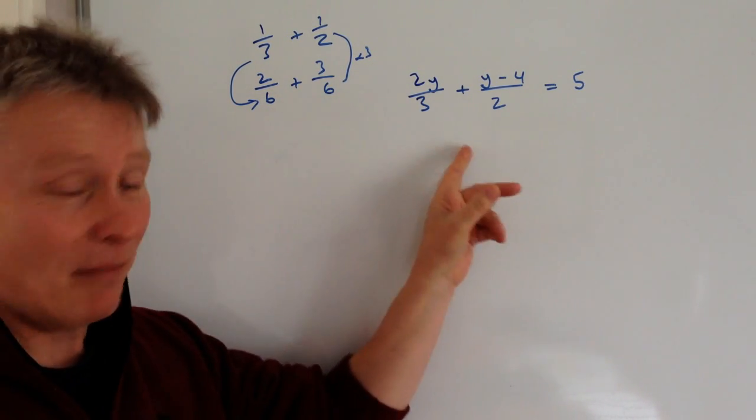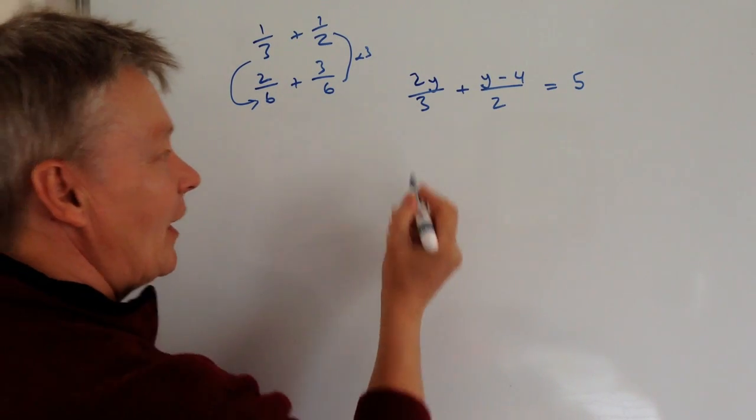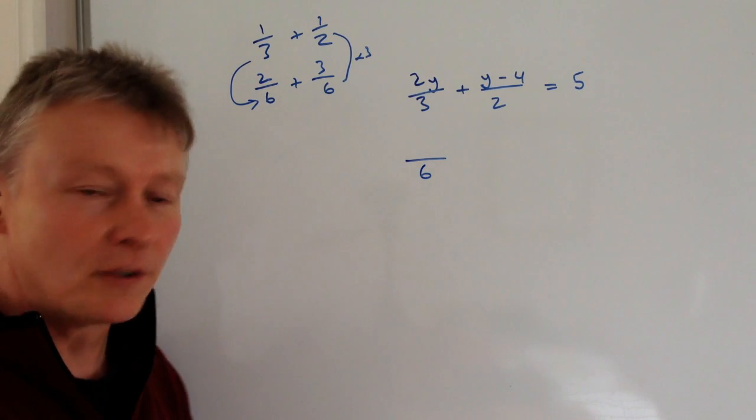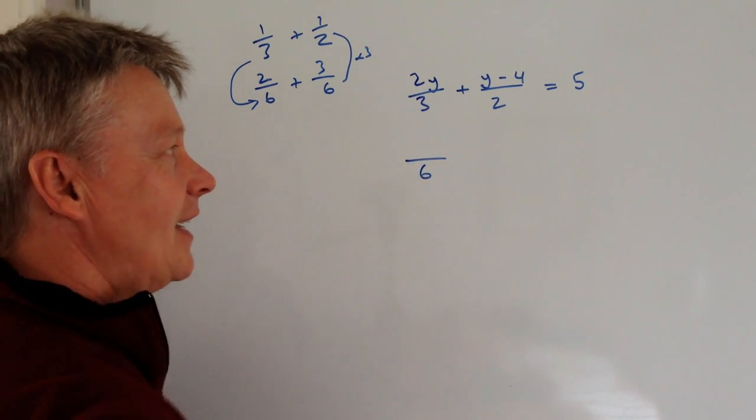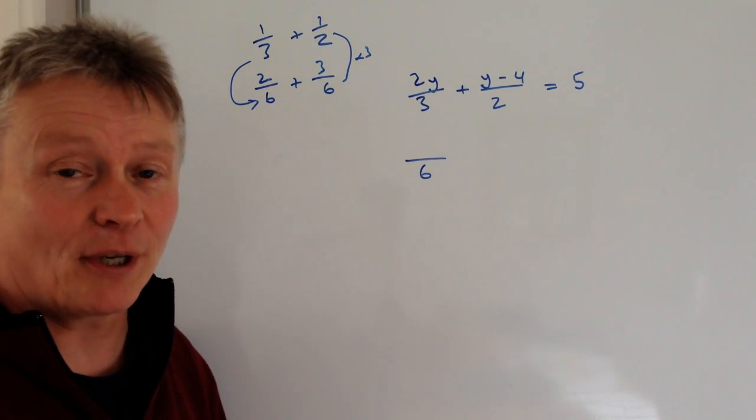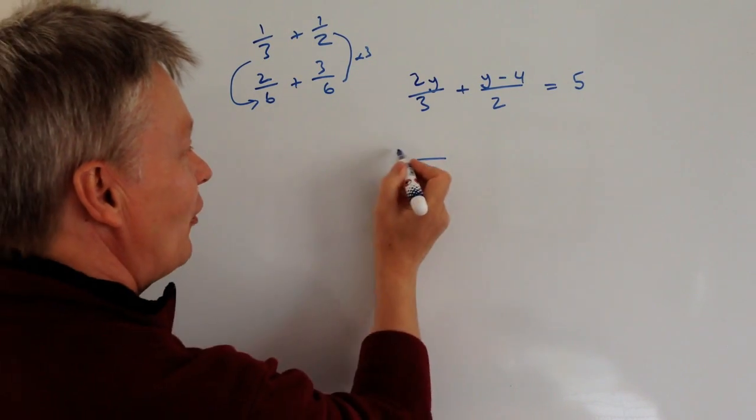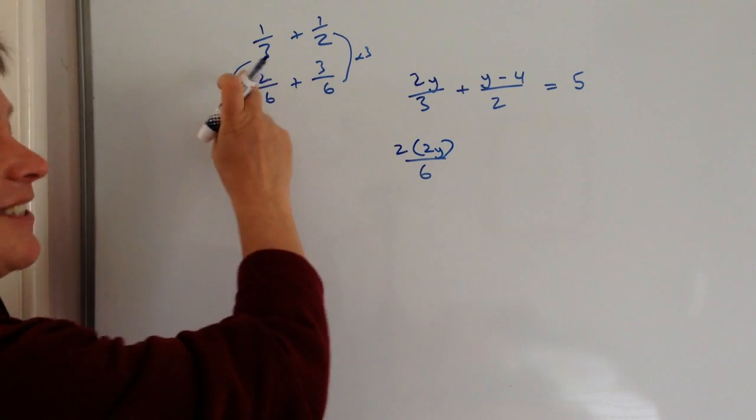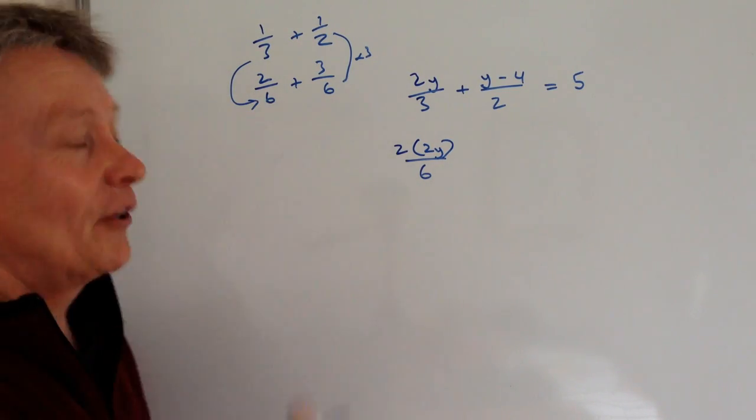We're going to do the same here. We're going to make this denominator six. What have we multiplied the three by to get to the six? We've multiplied it by two. So therefore, we're going to multiply the top term by two, which is exactly the same as we did here on this one.